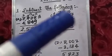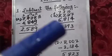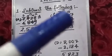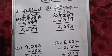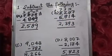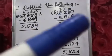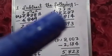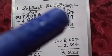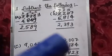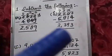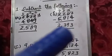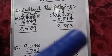2 became 1. We have taken borrow from 8 (thousands). 1 became 11. 11 minus 8 is 3, and 8 became 7. 7 minus 5 is 2. So the answer is 2,393.